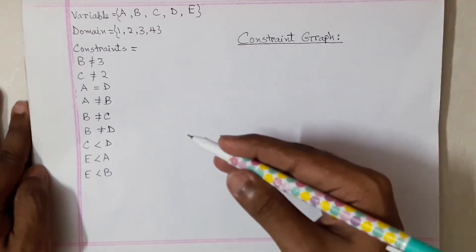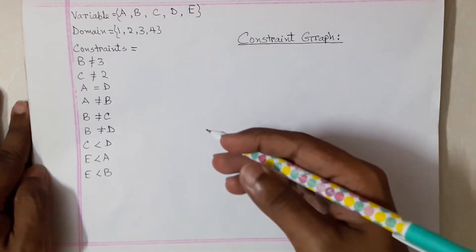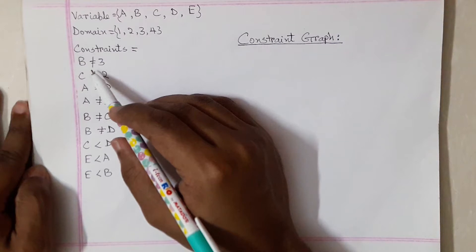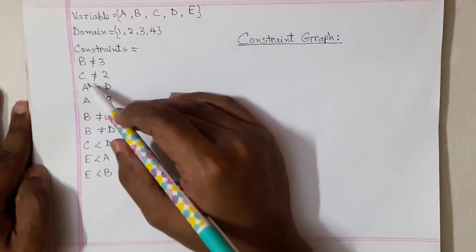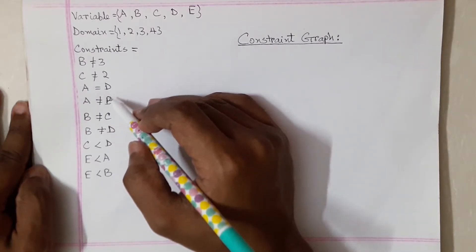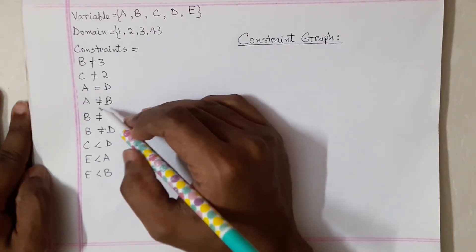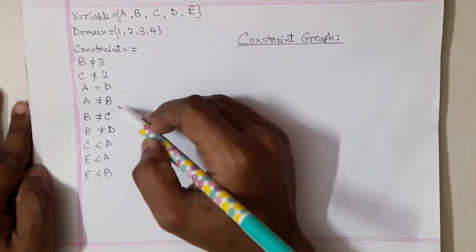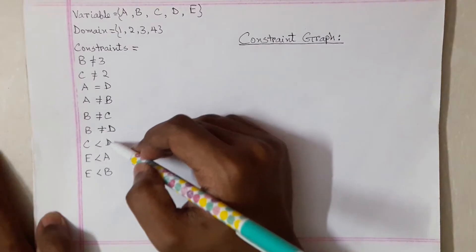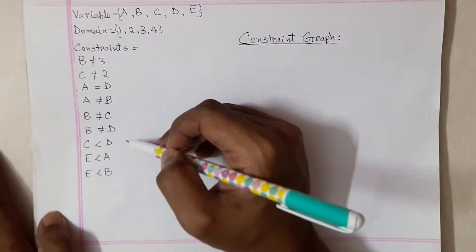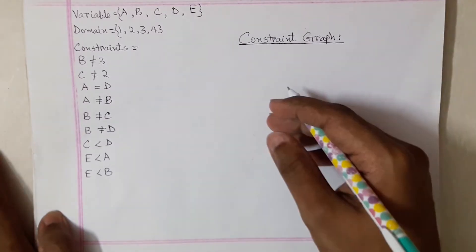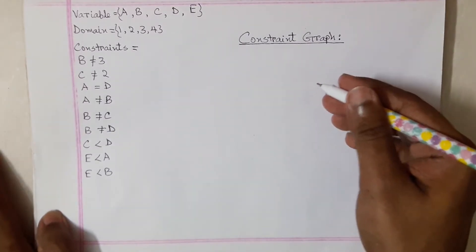The constraints are: b should not equal three, c should not equal two, a equals d, a does not equal b, b doesn't equal c, b doesn't equal d, c is less than d, and e is less than a and also less than b. So how do you make a constraint graph here?